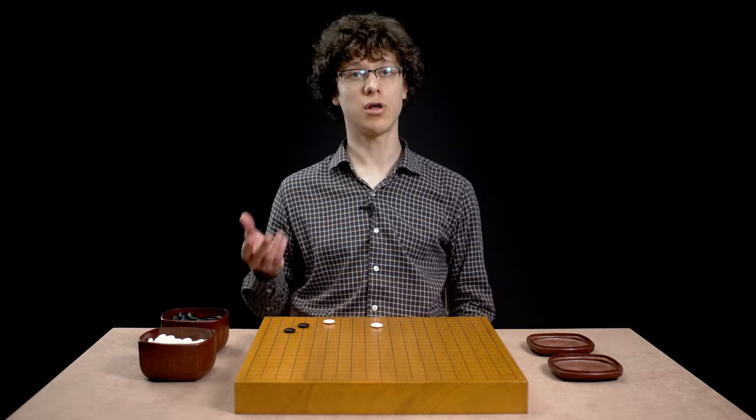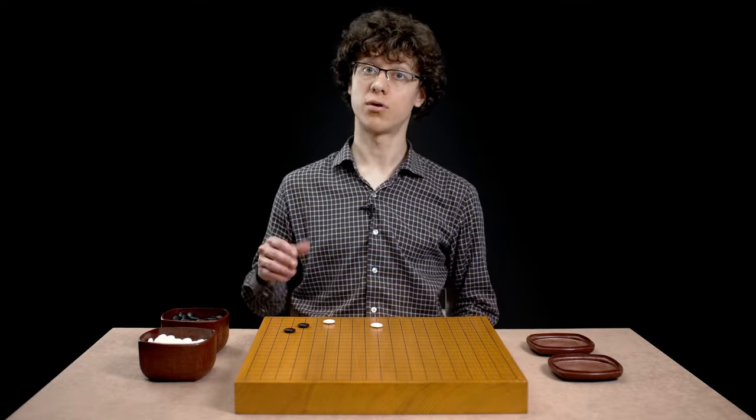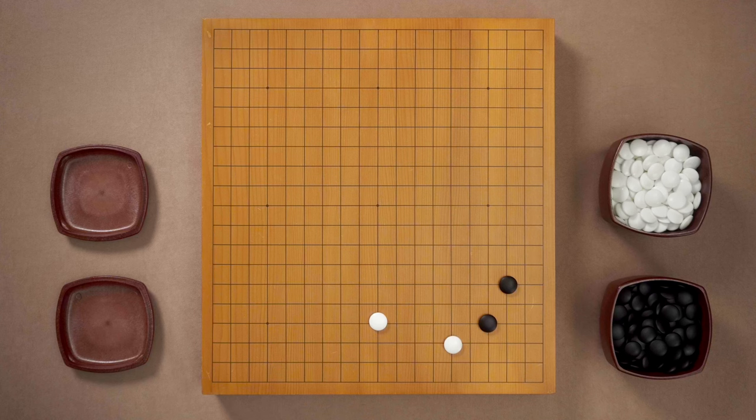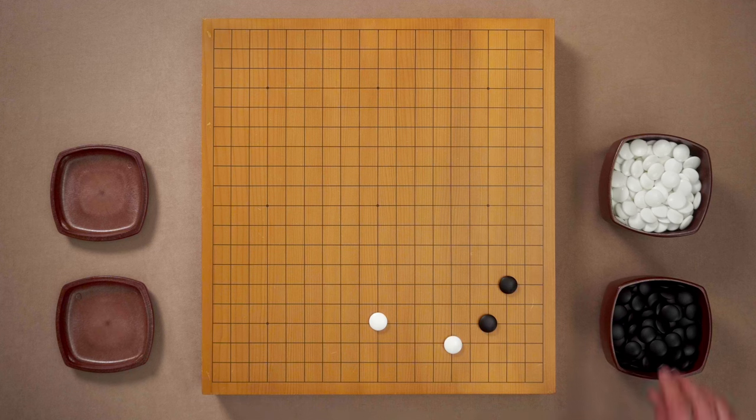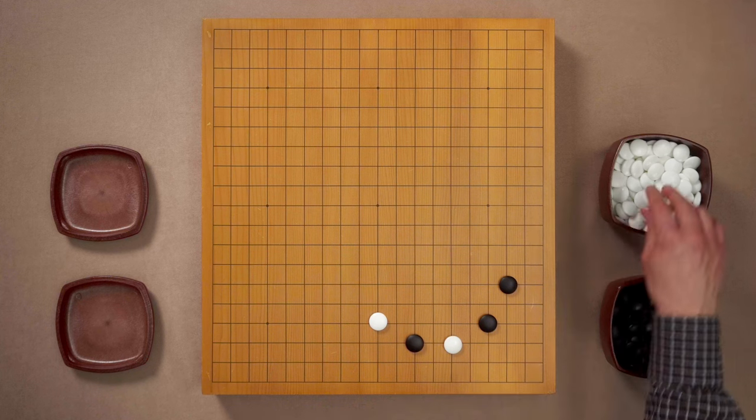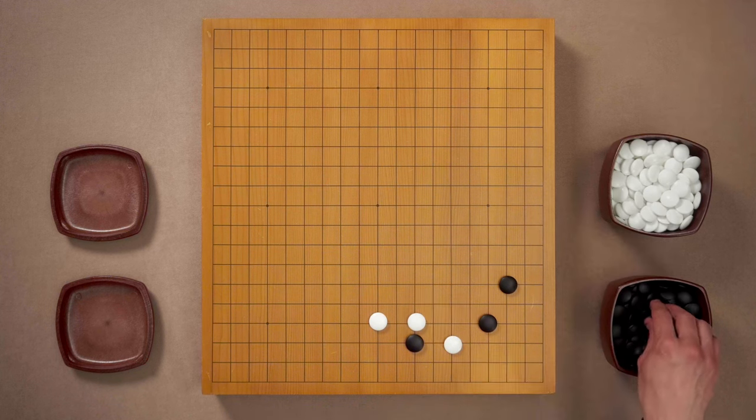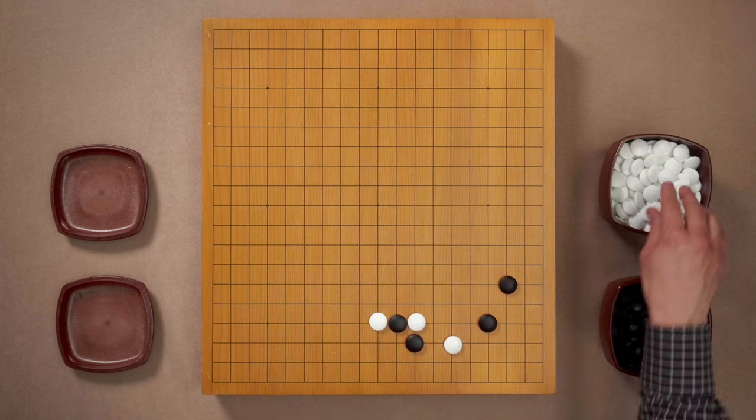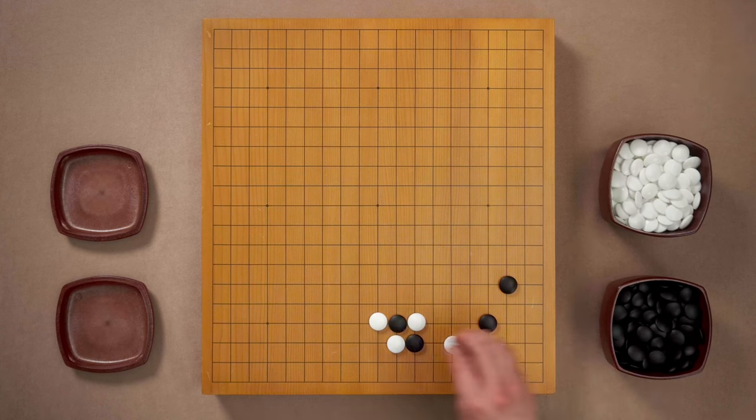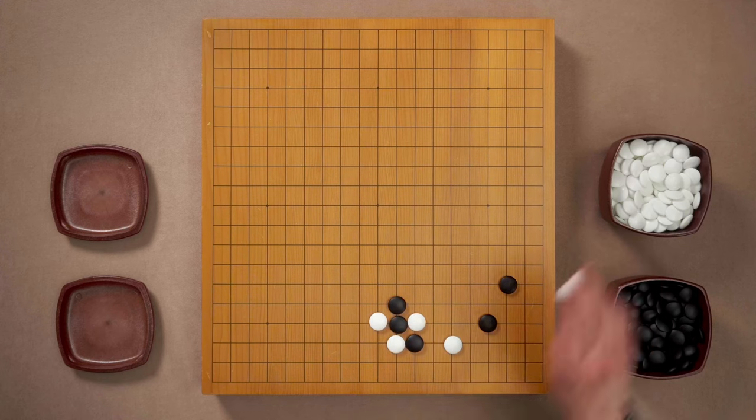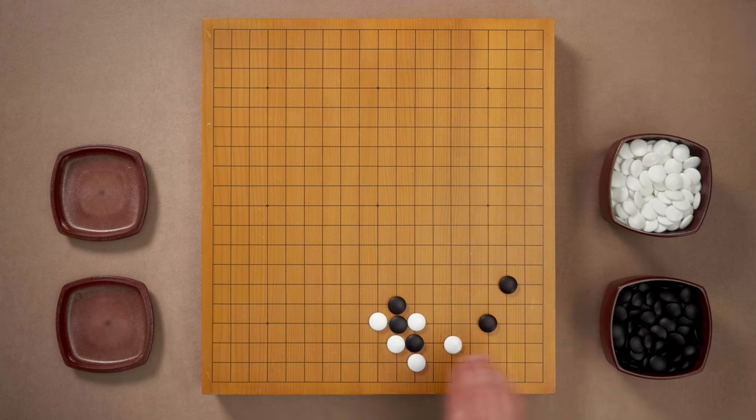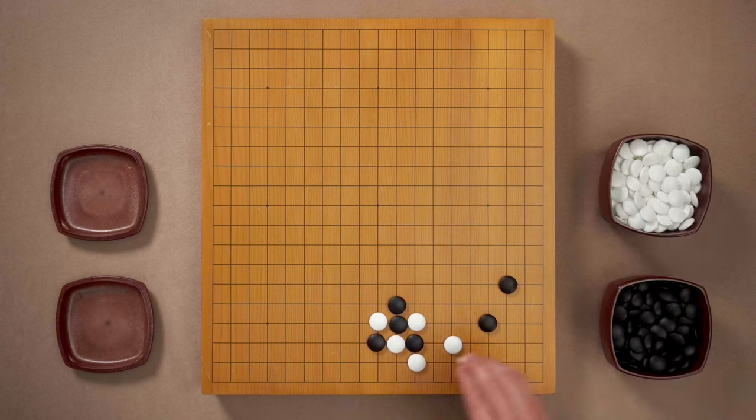Another technique which we will talk about is an atari provoking a ko. Let me show it to you on an example taken from a common joseki. In this shape it's common for black to invade. White covers. Black goes between white stones and then white captures one stone of black and in exchange black can capture white stone in a ladder. This is a good move.